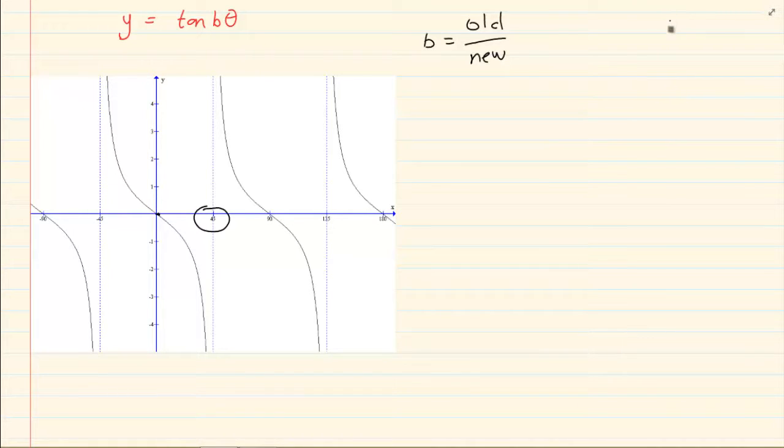Standardly an asymptote would be on 90. Now it is on 45. So B would equal to 90 over 45 which would equal to 2. So B is equal to 2. Our equation, Y is equal to tan 2 theta. Thank you for watching.